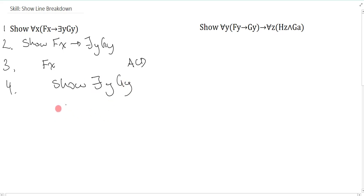Now what about this? Well my show line breakdown doesn't finish until I do an assume ID. This is neither a conditional nor is it a universal, so there's nothing to do here, and I just assume ID. And that's how you do show line breakdown in predicate logic with universal.